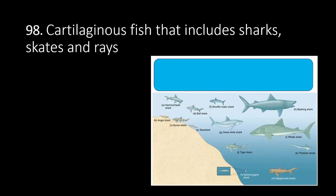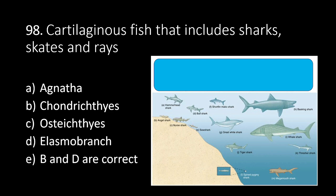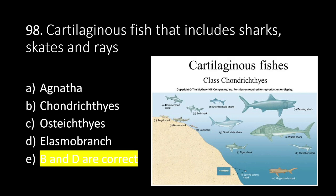Number 98: cartilaginous fish that include sharks, skates, and rays are called A. Agnatha, B. Chondrichthyes, C. Osteichthyes, D. Elasmobranchs, E. B and D are correct. The answer is E. B and D are correct. The cartilaginous fish that include sharks, skates, and rays are also called Chondrichthyes and Elasmobranchs.